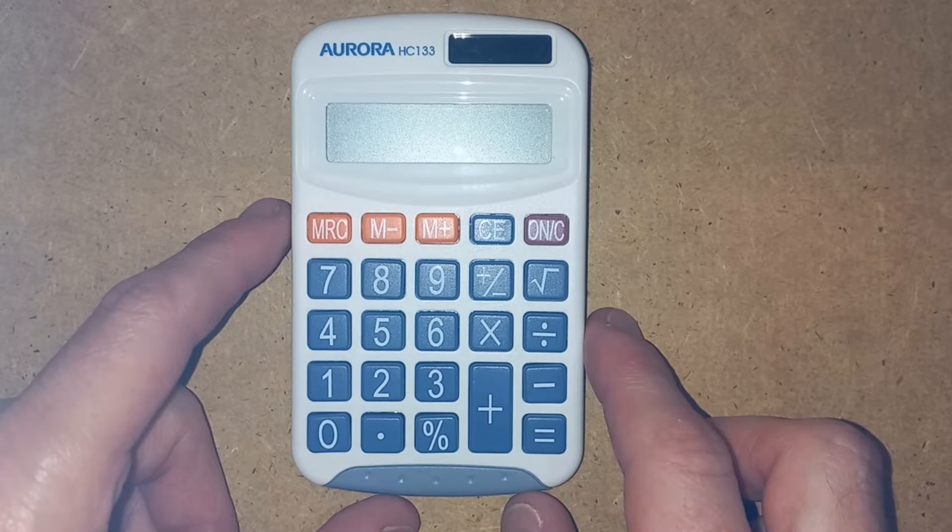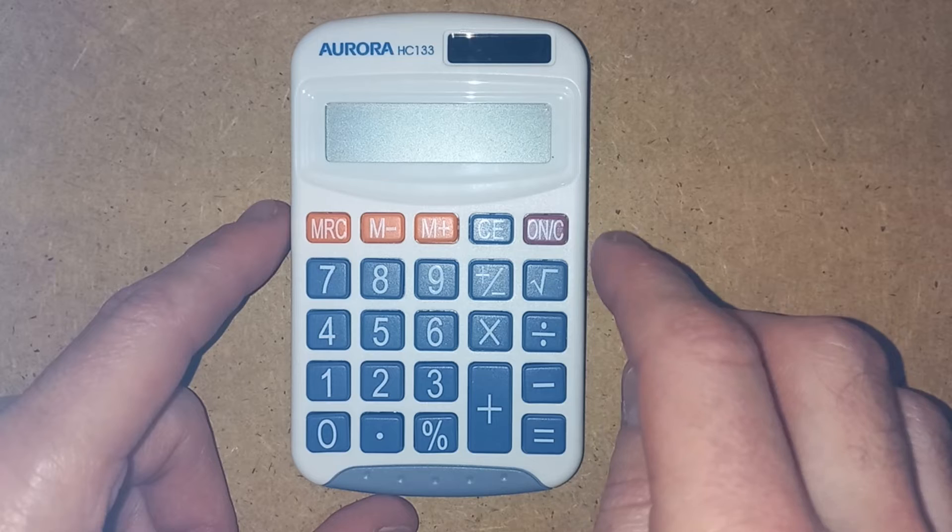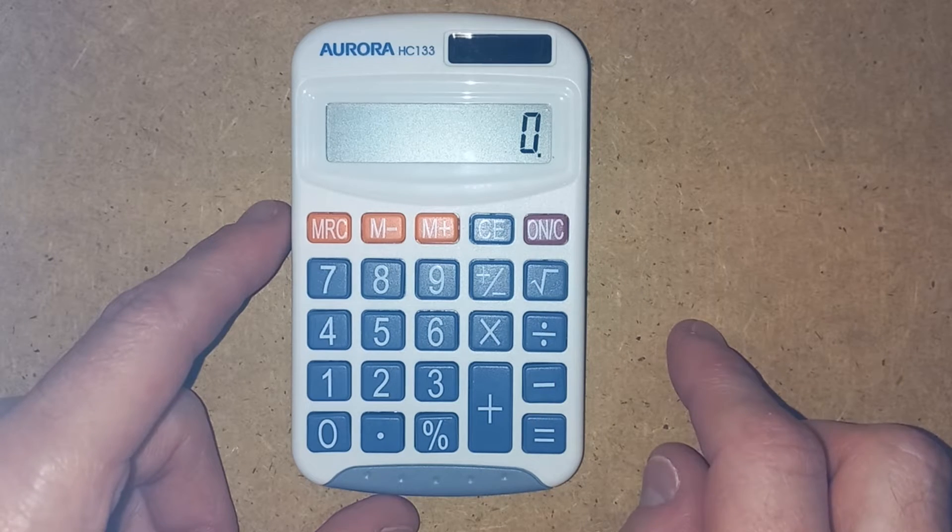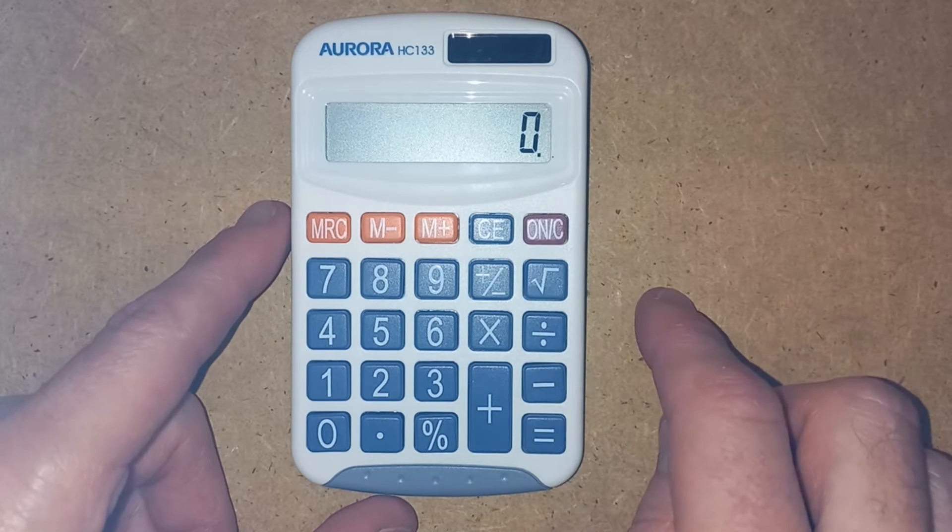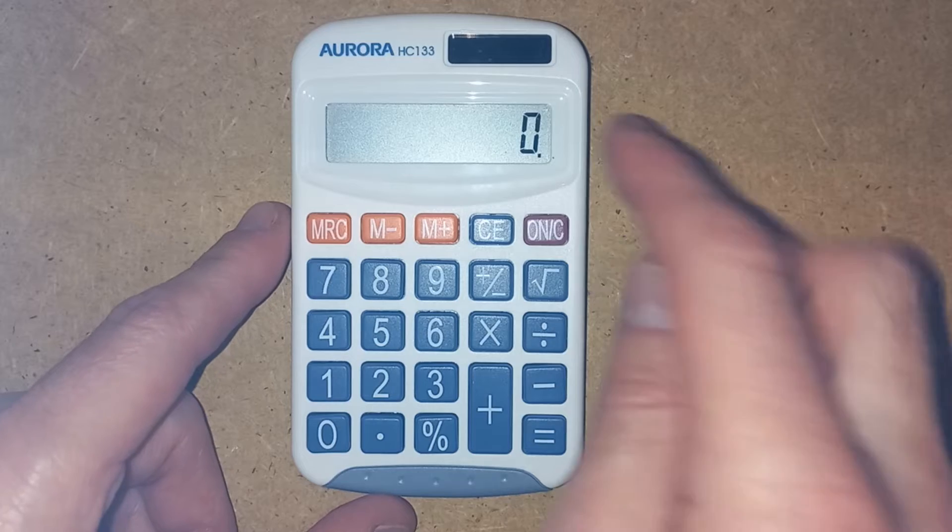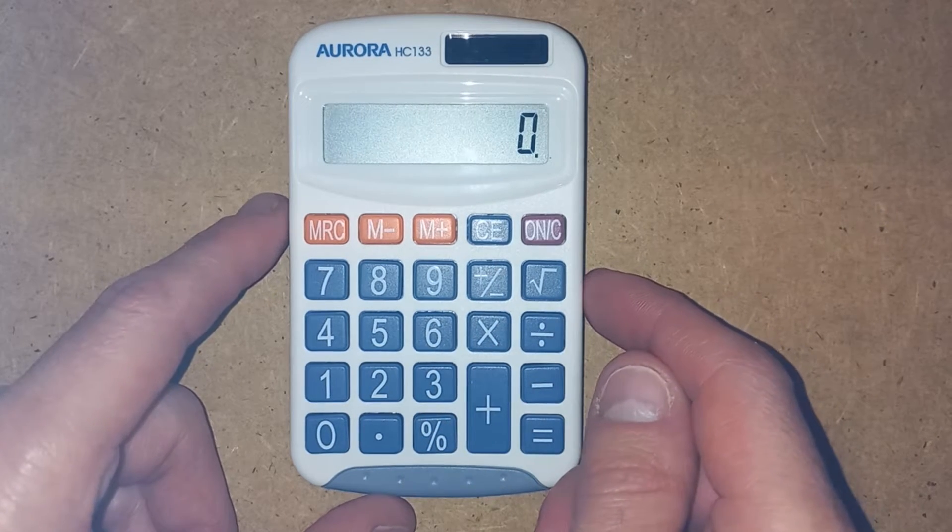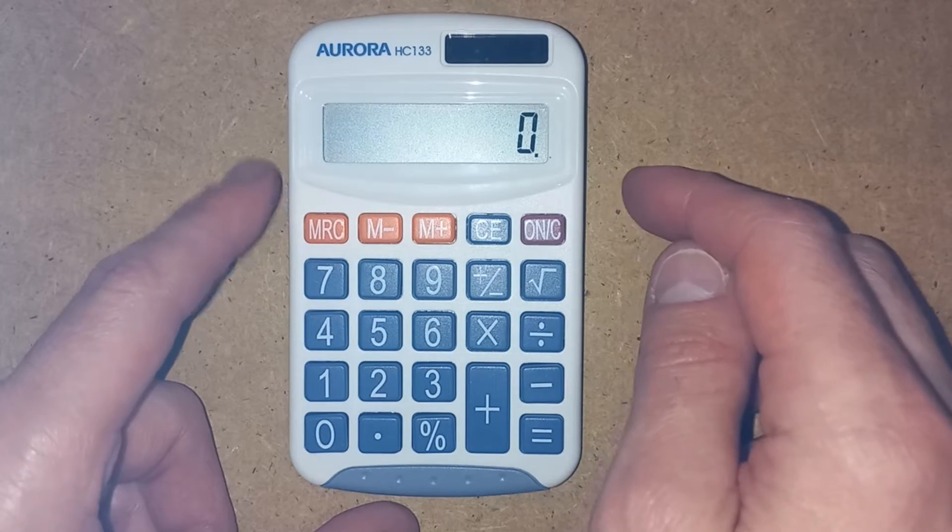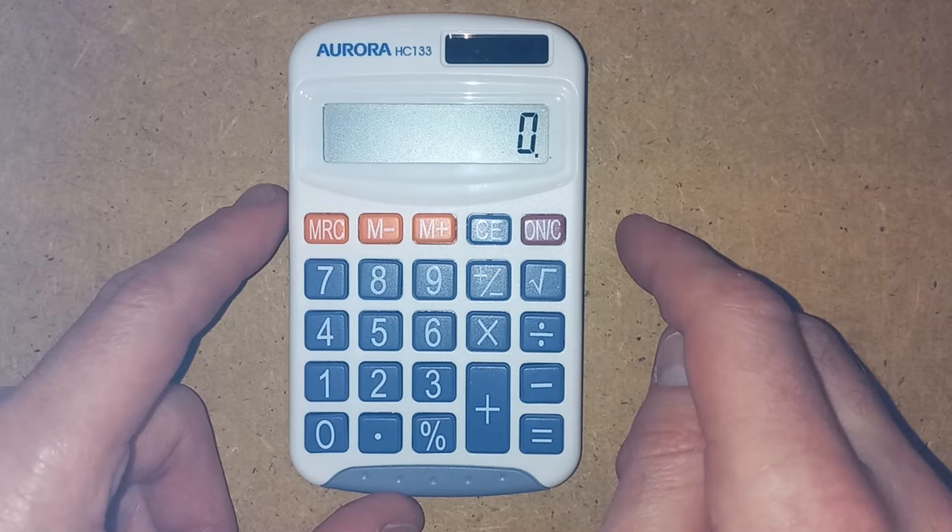So the very first button we're going to press is this red one here, ON/C, and it turns the calculator on. Now the ON bit, hopefully that's obvious what it does, the screen lit up. And you'll see that this calculator, we've got a solar panel as well as it working with batteries. Again, it's just handy if you're using it in an exam to feel you've got that backup. So if your batteries did die, you've still got the solar unit in there as well.